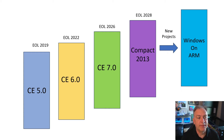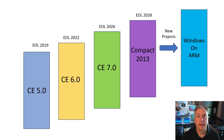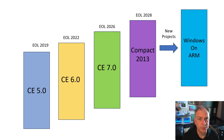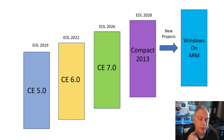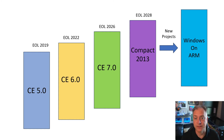CE 5 went end of life in 2019, CE 6 in 2022, and CE 7 will go end of life in 2026. What does end of life mean? Does that mean you can do a last-time buy, stock up on it, and keep putting that sticker on the machine, loading the software, and shipping it? The answer is no.